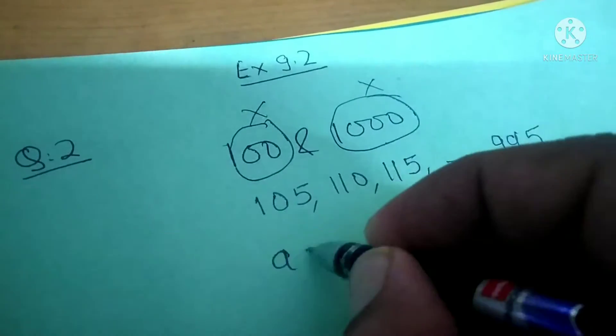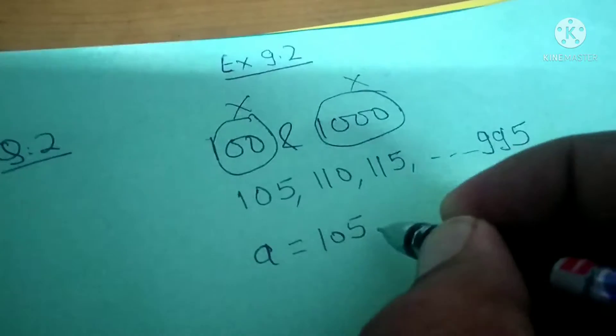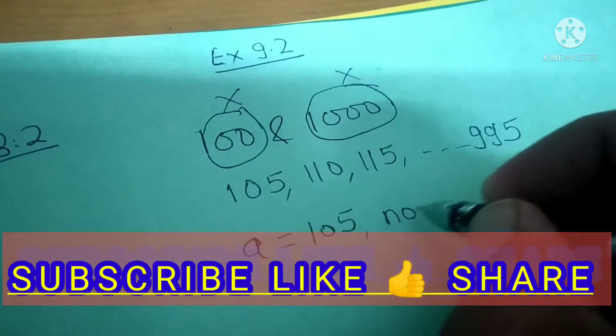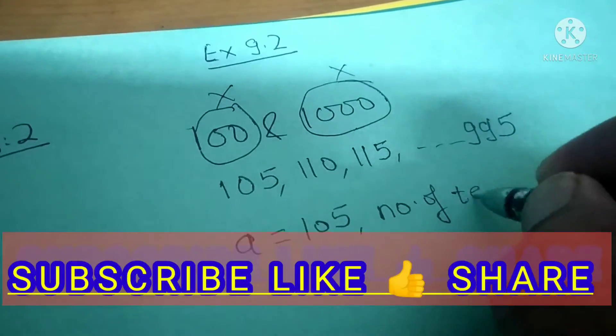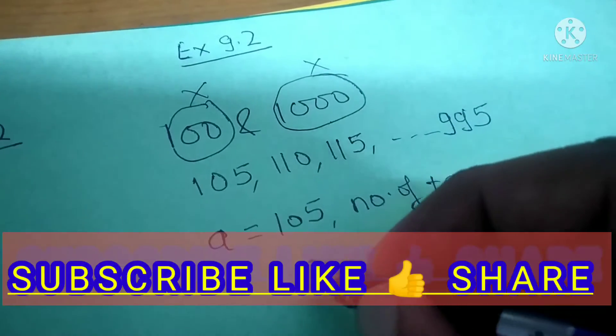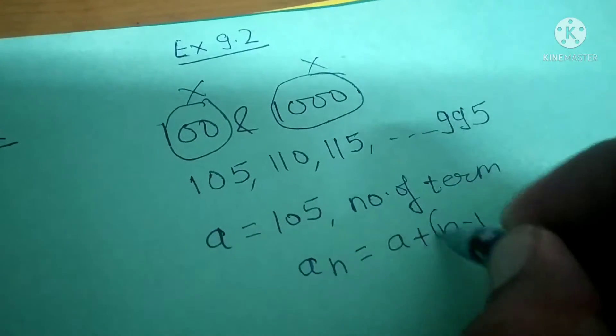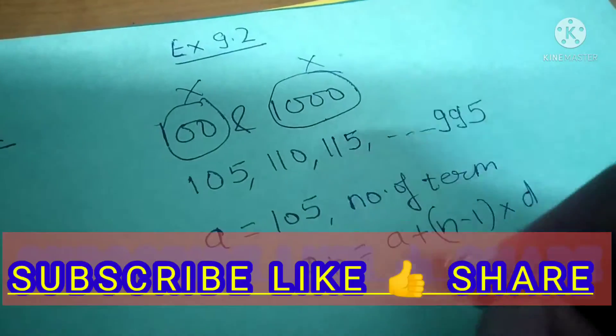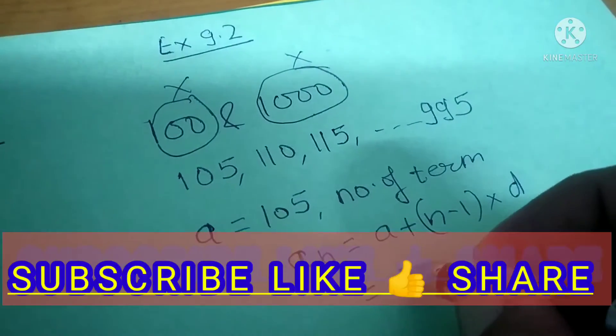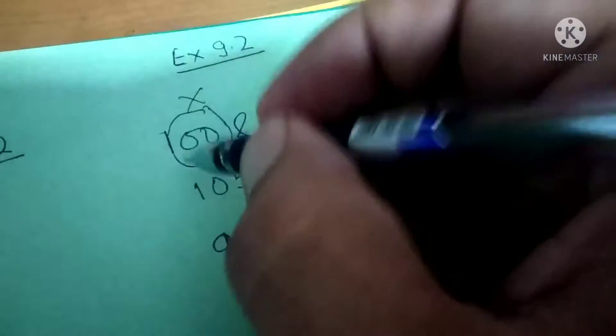So where a is equal to 105, and you have to find out the number of terms. Number of terms we do not know. So this is the formula: An is equal to a plus n minus 1 whole into d. So a, the first term, is 105.